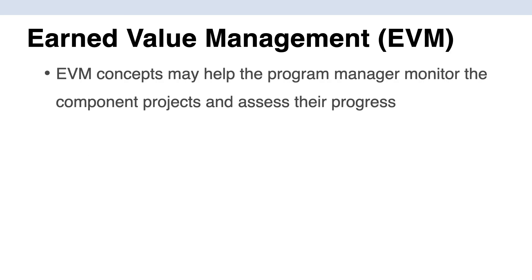The last formula you'll need to know is Earned Value Management, or EVM. EVM concepts help program managers monitor component projects and assess their progress — specifically whether you are behind schedule, ahead of schedule, behind budget, or over budget. EVM is a series of formulas to help you assess the health of your project, and it mainly focuses on schedule and cost. I have a separate video on EVM formulas which I'll link below.